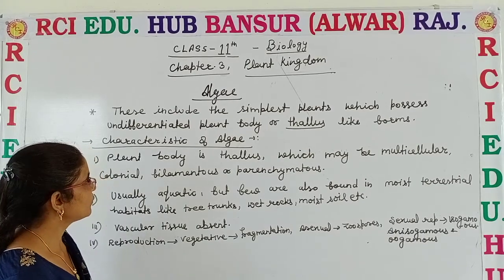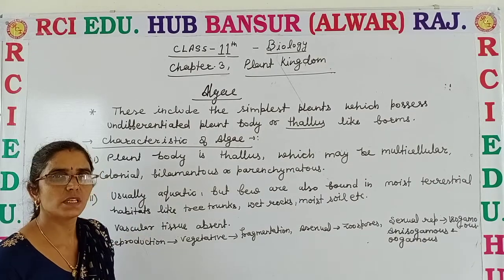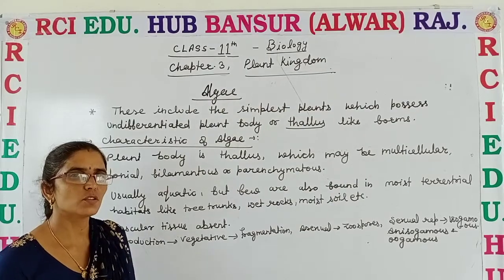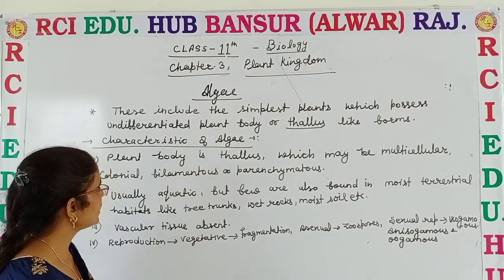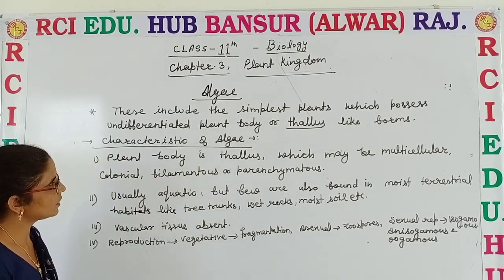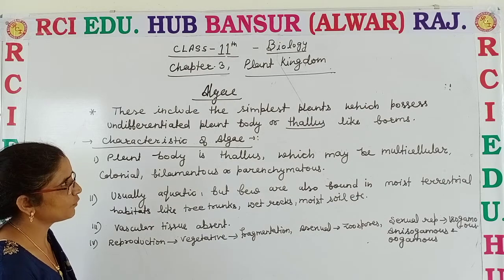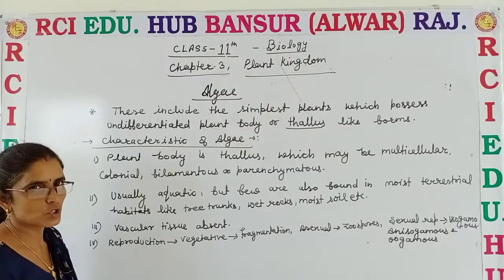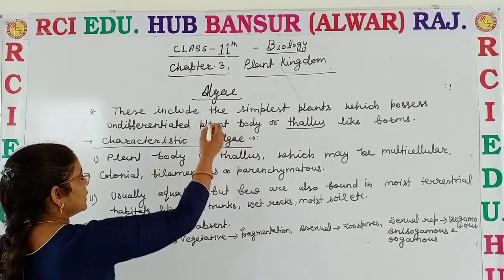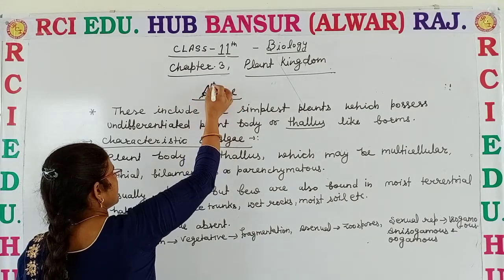Before this we discussed what is the main basis for the classification of the Plant Kingdom. Now in this chapter we will discuss in detail about algae, bryophyta, pterophyta, gymnosperms and angiosperms. Let us first start with our first topic: algae.